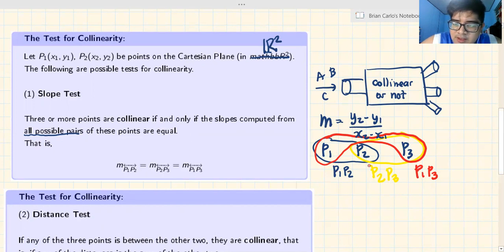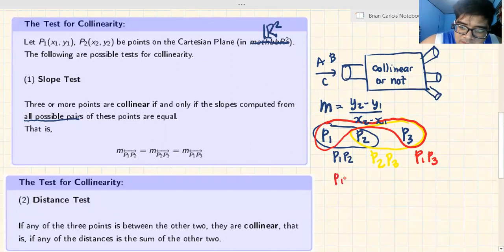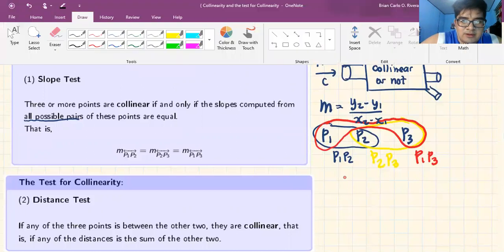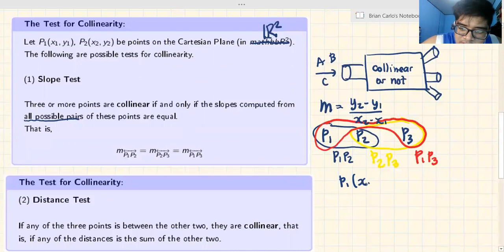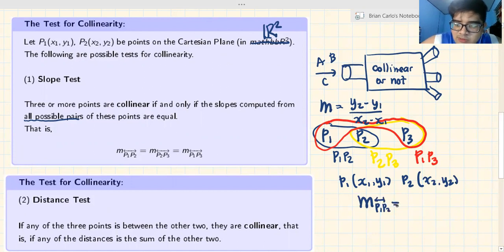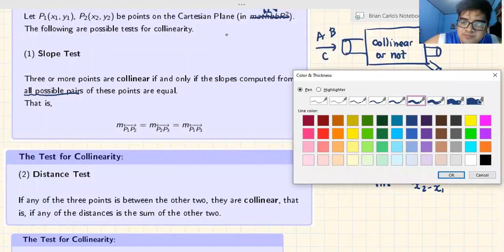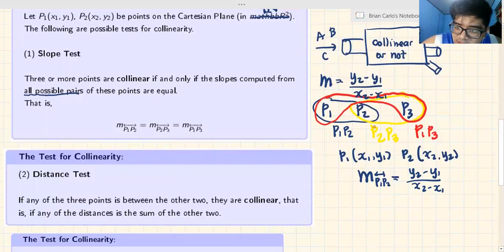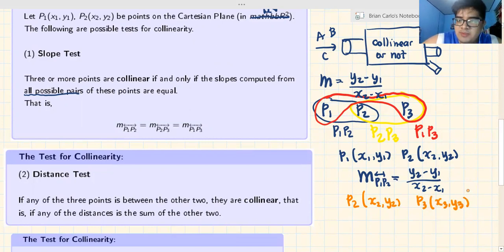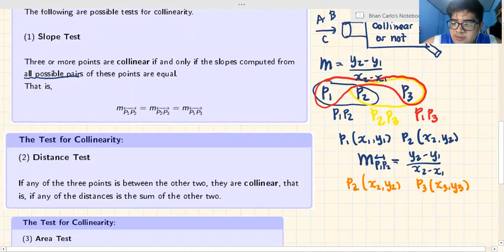Notice P1 has coordinates x1,y1 and P2 has x2,y2. The slope formula is y2 minus y1 over x2 minus x1. Notice the pattern - the subscript of P matches the subscript of x and y.